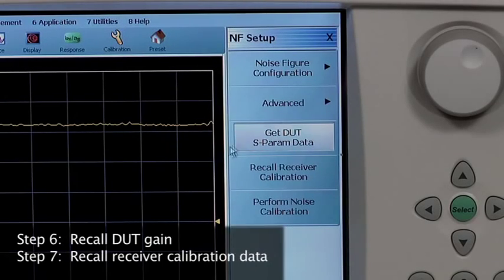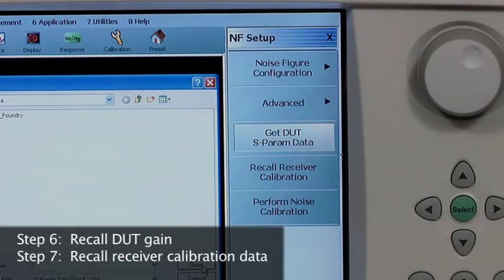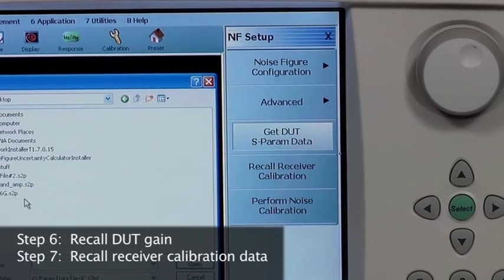In steps six and seven, we will recall the preparation data, the amplifier S parameters and the receiver calibration.